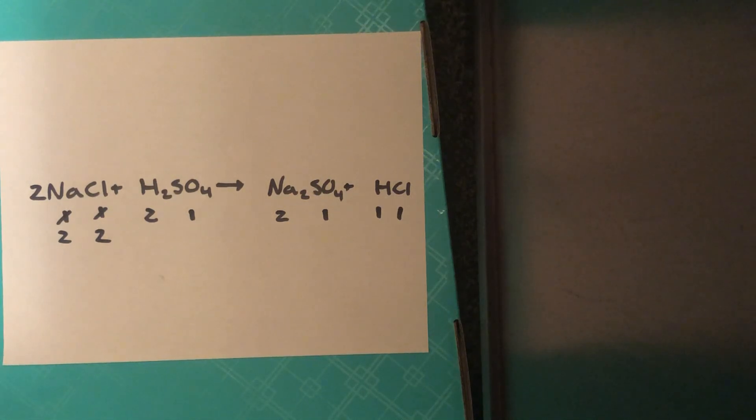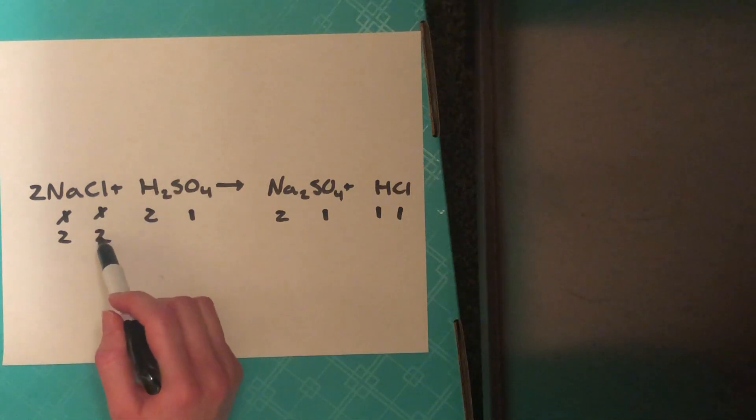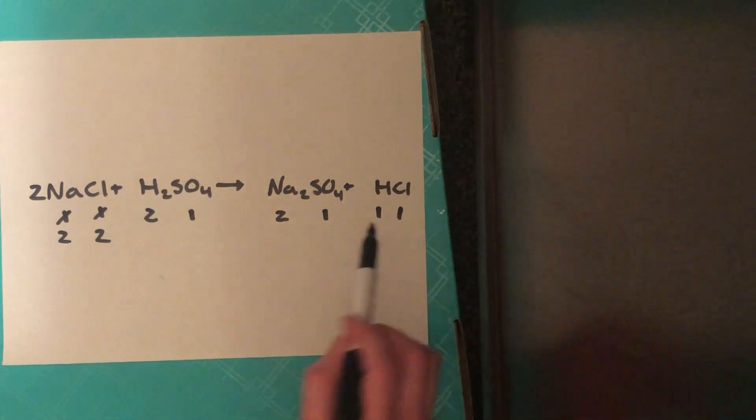Now we'll check if everything's matching. We have two sodiums on the reactant side, two on the products, two chlorides on the reactant side, one on the products. So we're going to change that.